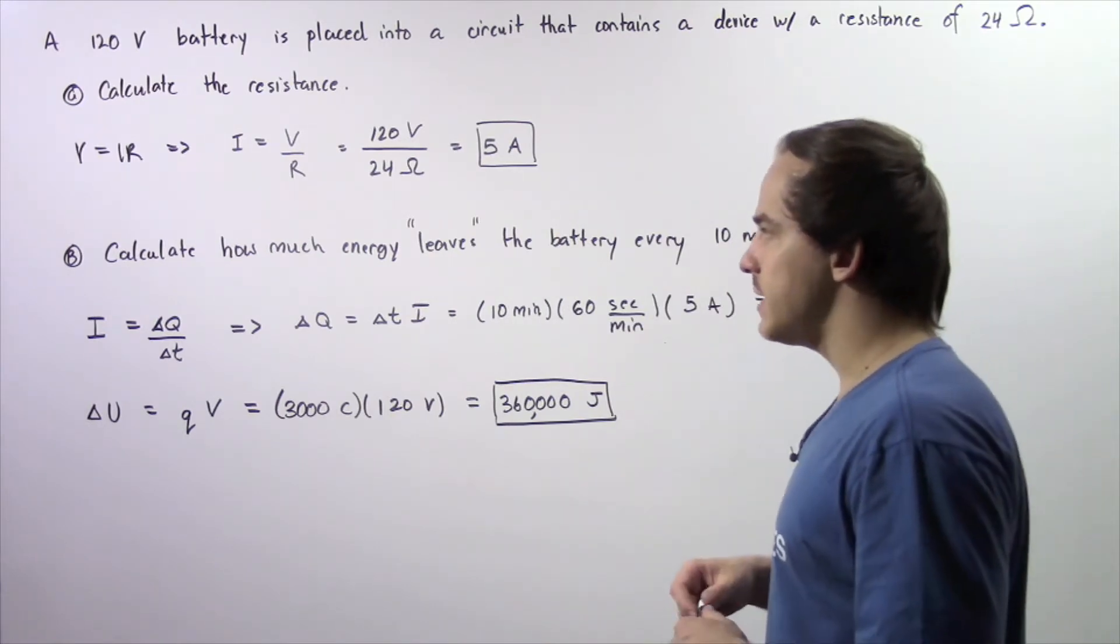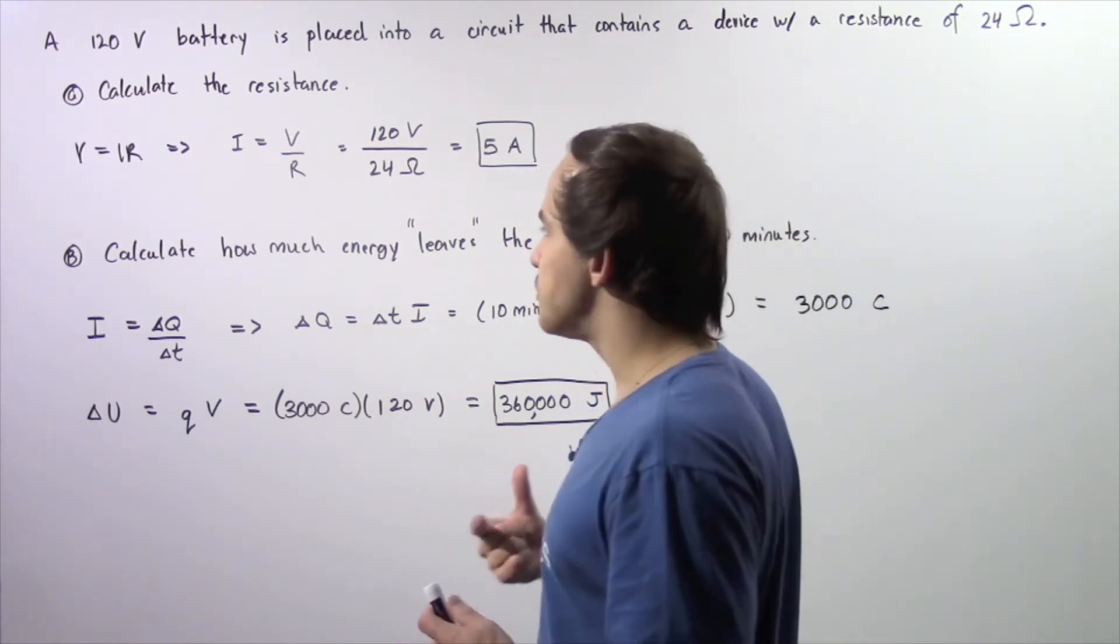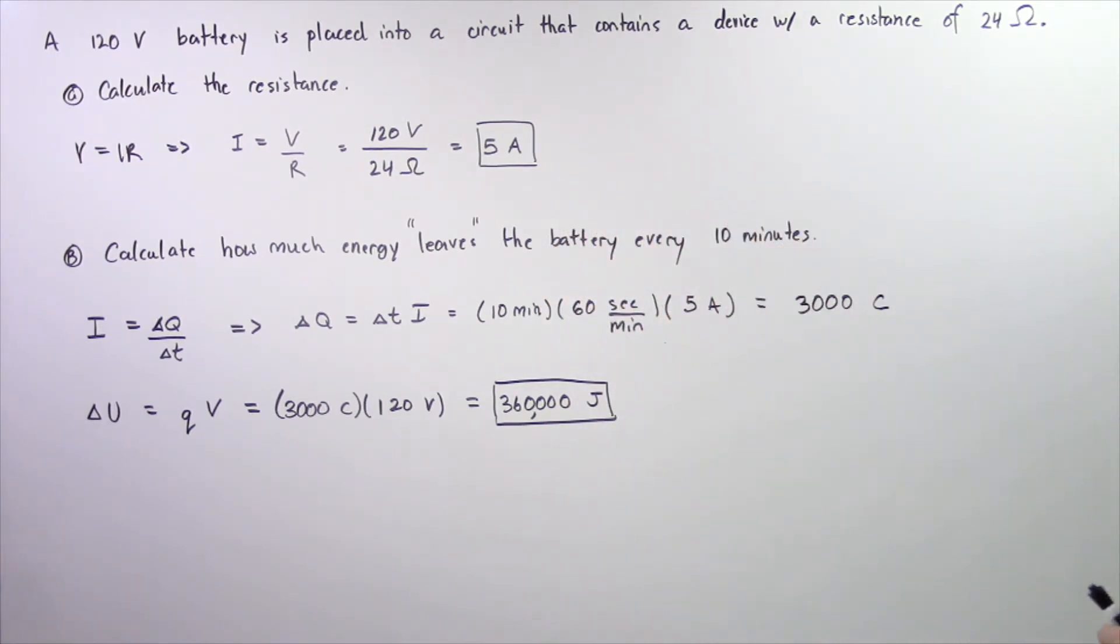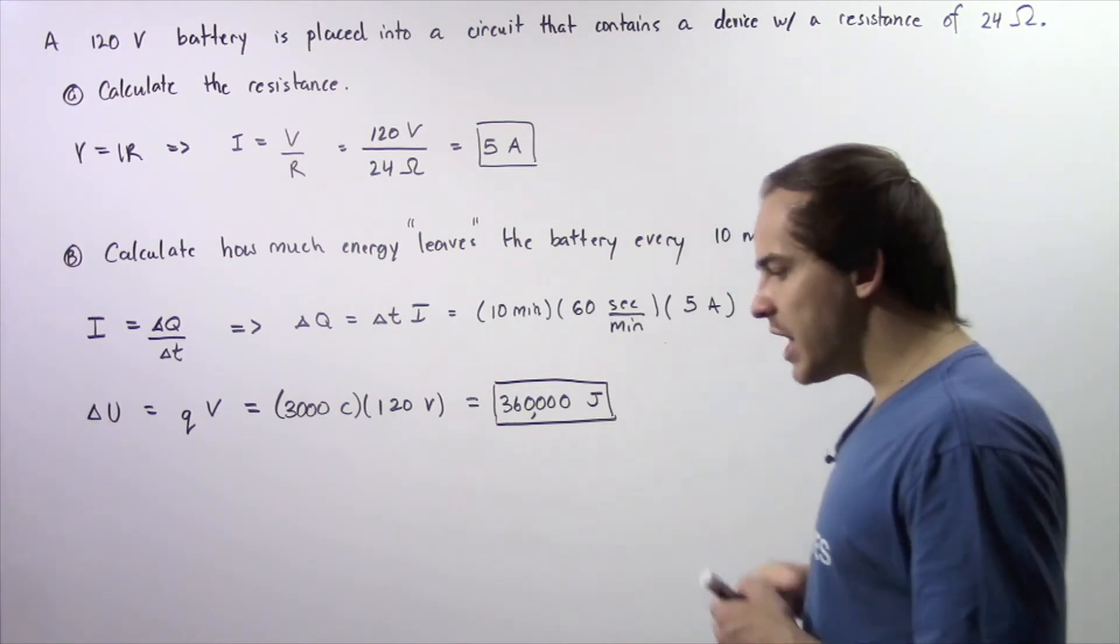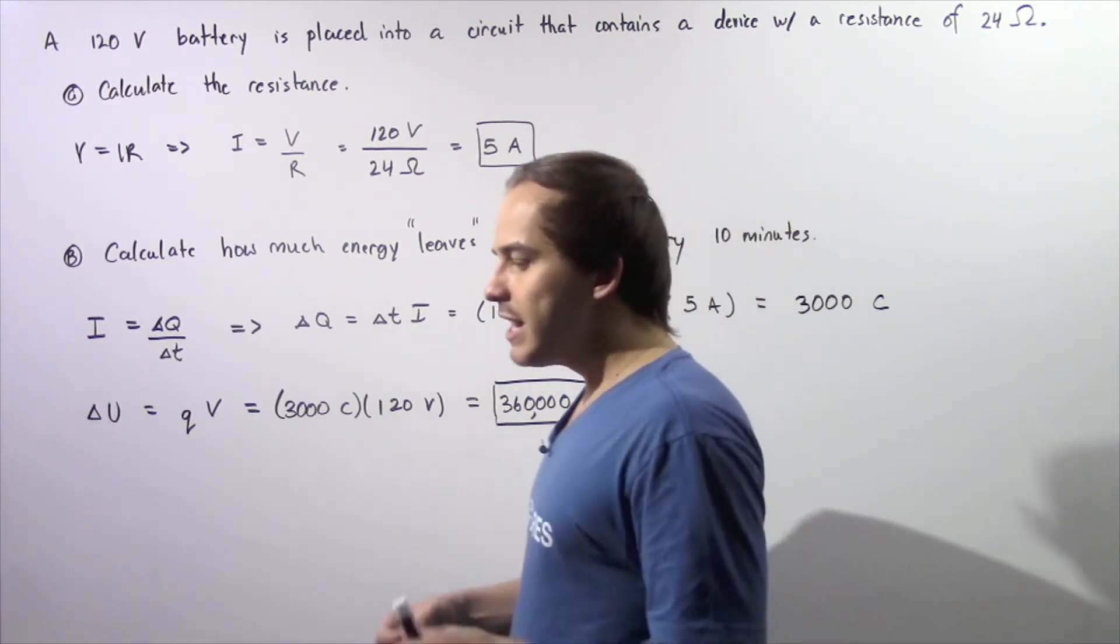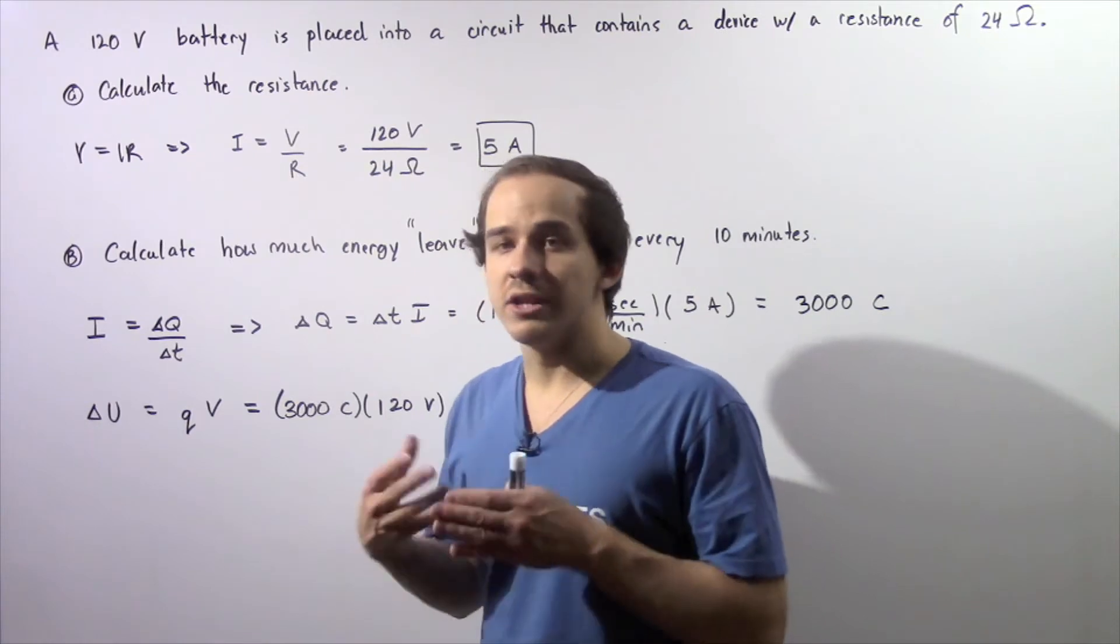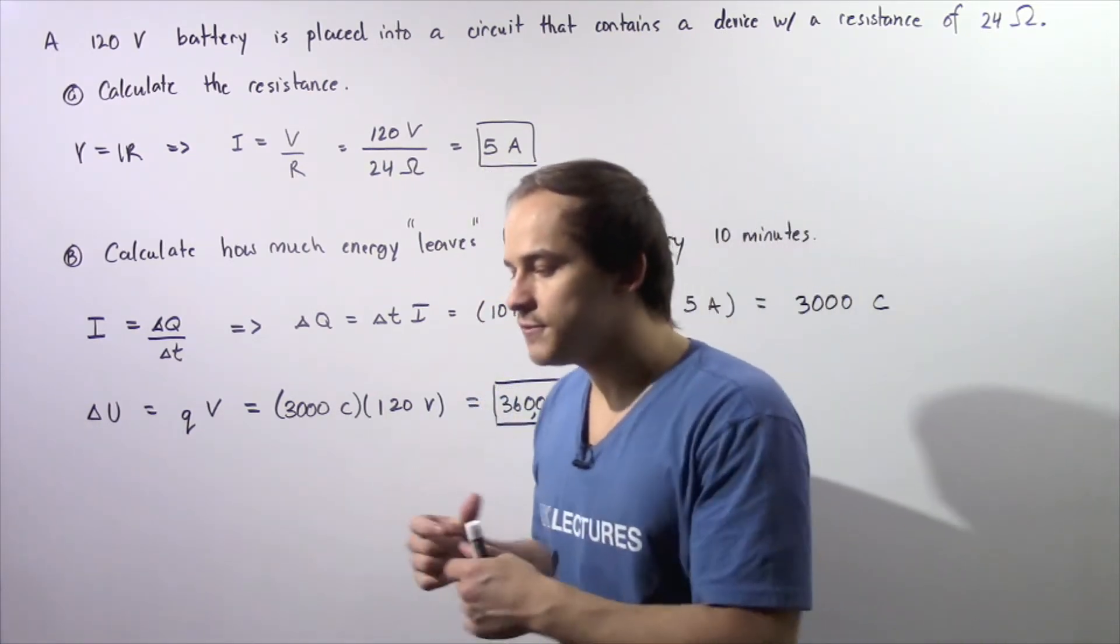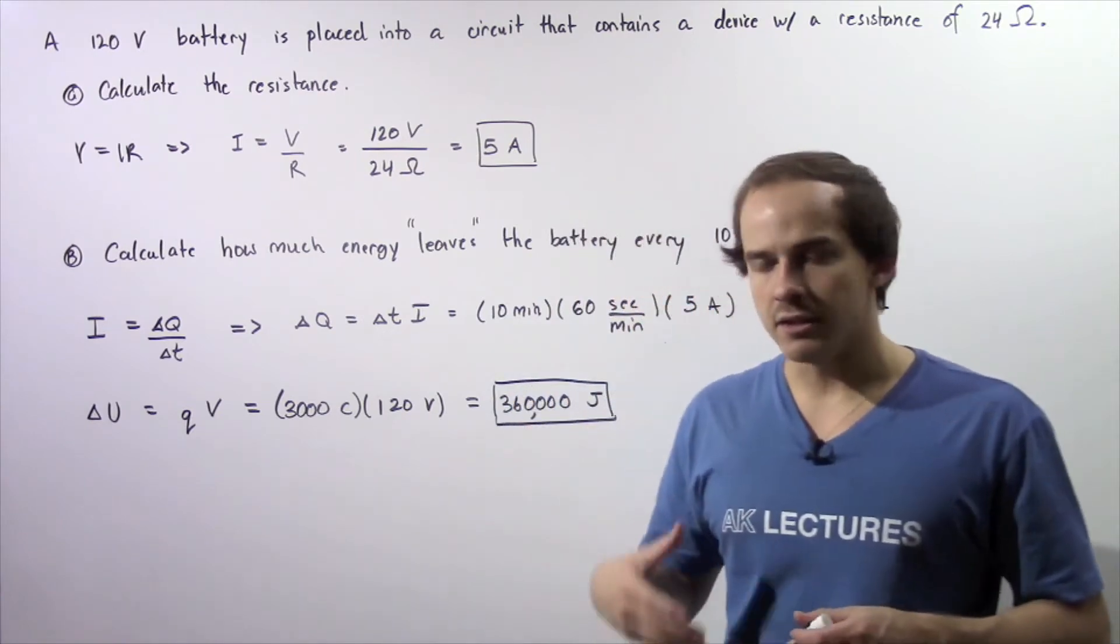Let's move on to part B. Calculate how much energy leaves the battery every single 10 minutes. To calculate the energy, we have to calculate the change in our electric charge. So how much electric charge leaves that battery every single 10 minutes.